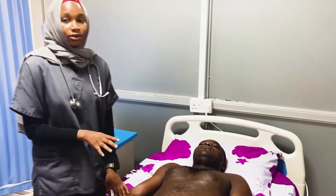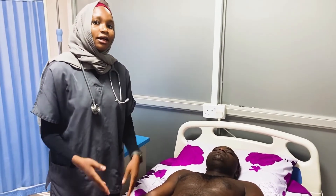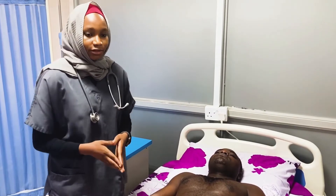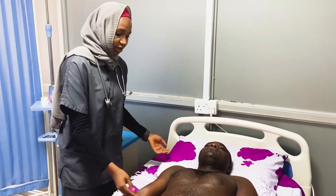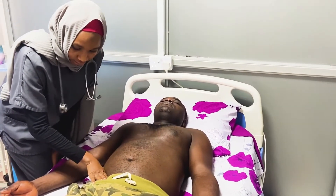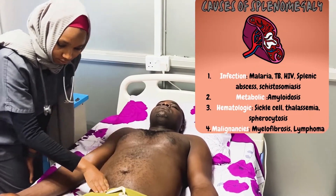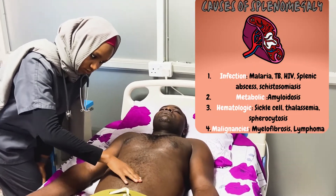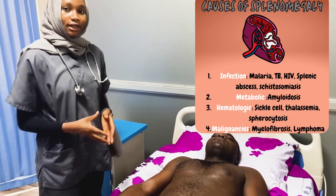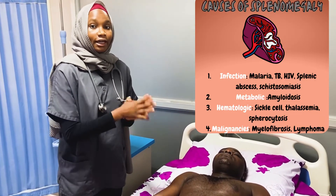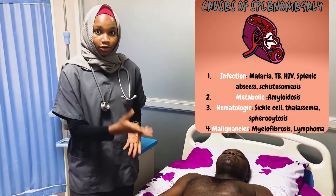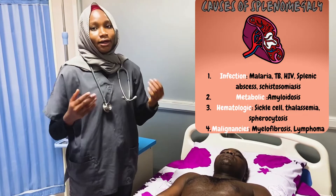After finishing with the liver, the next organ is the spleen. The technique is the same; it's just the direction that's different. We ask the patient to breathe in and out, starting at the right iliac fossa and moving diagonally to the left. The spleen should not extend beyond the subcostal margin. But if you do feel an enlarged organ, it is advised to feel for a notch to confirm that it's the spleen that you're feeling.